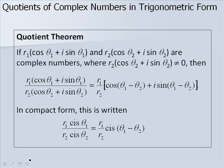We end up with the following quotient theorem when dividing complex numbers in trigonometric form. We simply divide our r values and take the cosine of our two angles subtracted, plus i sine of our two angles subtracted.